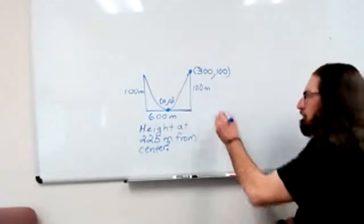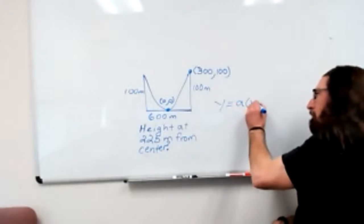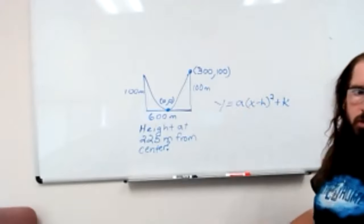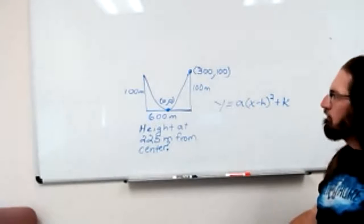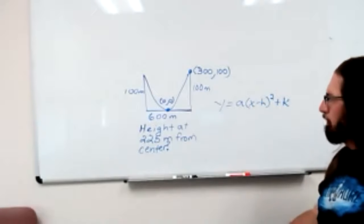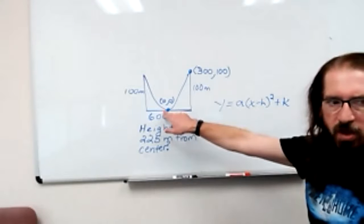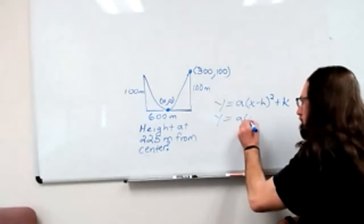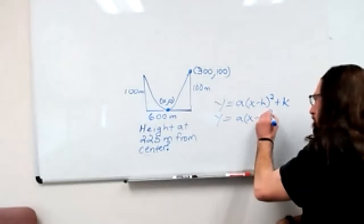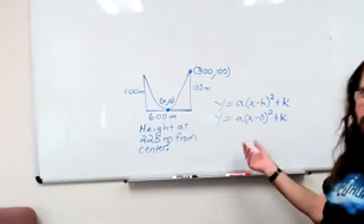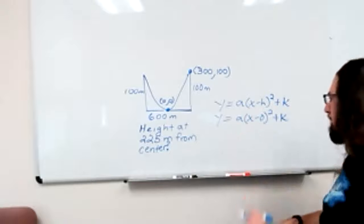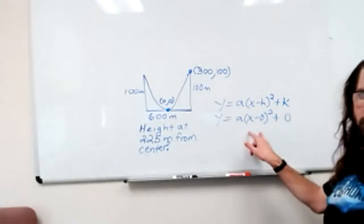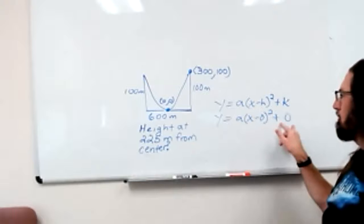If you write the quadratic function in this form, like what you would arrive at from completing the square, plug in h comma k as zero zero. And a little simplifying, that's just going to be ax squared. So we know what happens when we subtract zero and when we add zero.